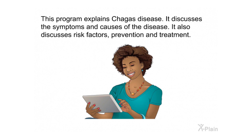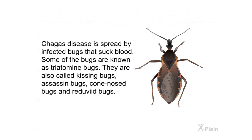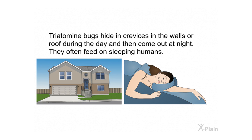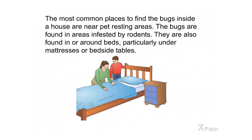Chagas disease is spread by infected bugs that suck blood. Some of the bugs are known as triatomine bugs. They are also called kissing bugs, assassin bugs, cone-nosed bugs, and reduviidae bugs. Triatomine bugs hide in crevices in the walls or roof during the day and then come out at night. They often feed on sleeping humans. The most common places to find the bugs inside a house are near pet resting areas.